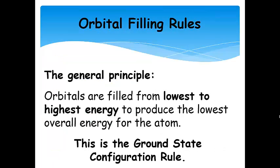Orbital filling rules: there are a few rules as we slot electrons into orbitals. The general principle is that we start from the lowest energy and keep successively adding electrons from lowest to highest energy — that's called the ground state configuration rule. Part of that involves lower n and s orbitals being lower energy than p orbitals. Another part is called Hund's rule, which we'll get to in a moment.